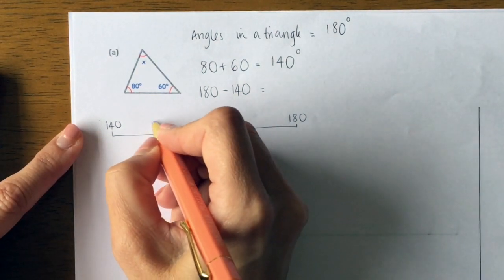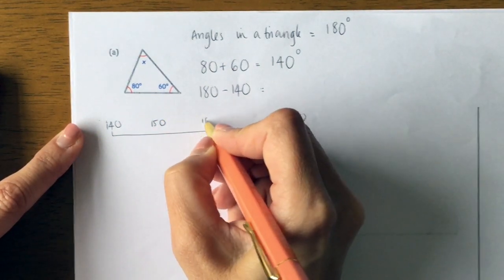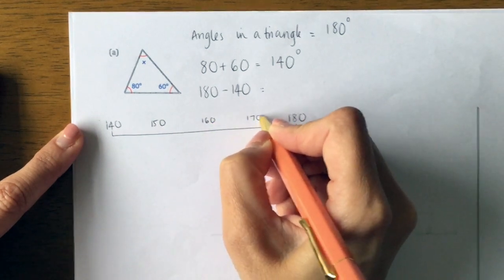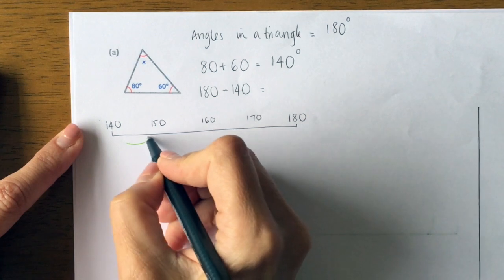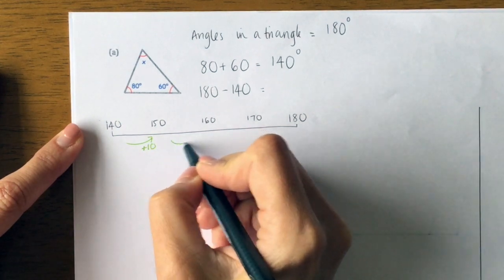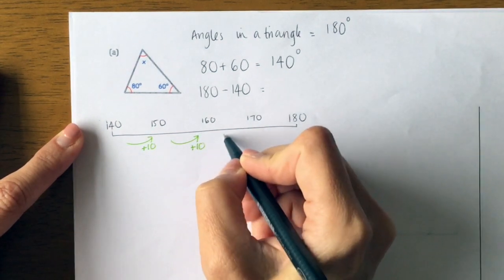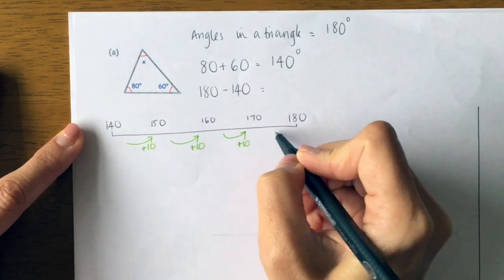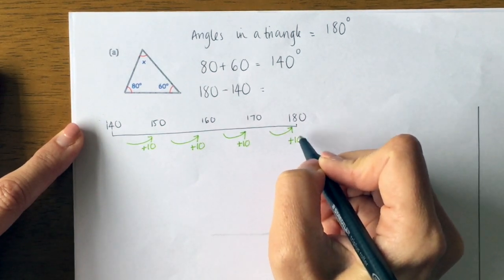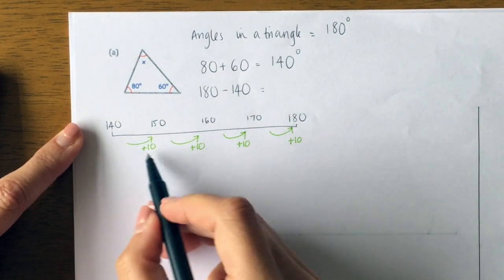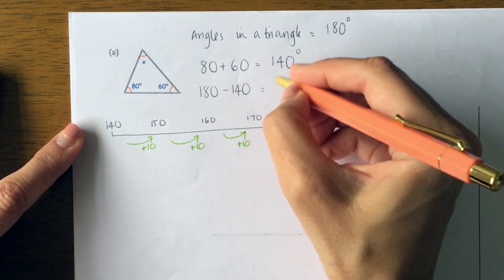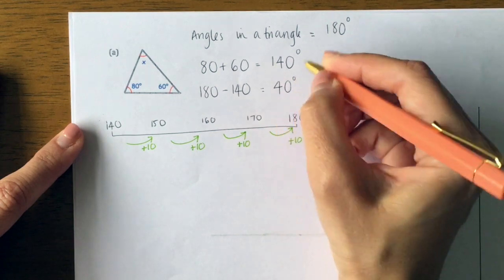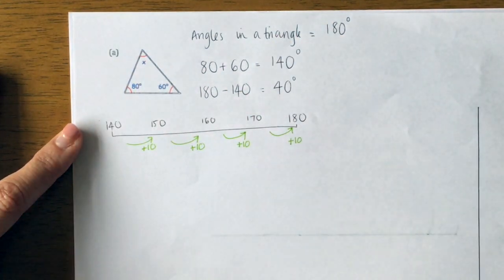So if I do my jumps, I'm adding 10 each time. How many tens have I had to add? Four. So I know that it's 40 more to get to 180. So 180 take away 140 is just 40, so the missing angle here was 40 degrees.